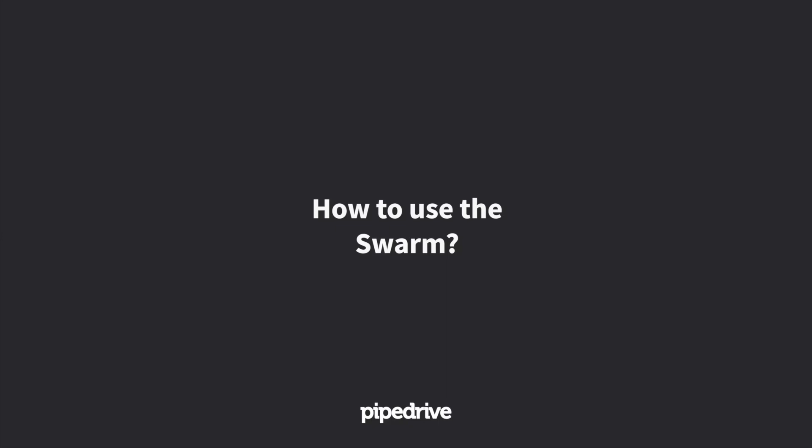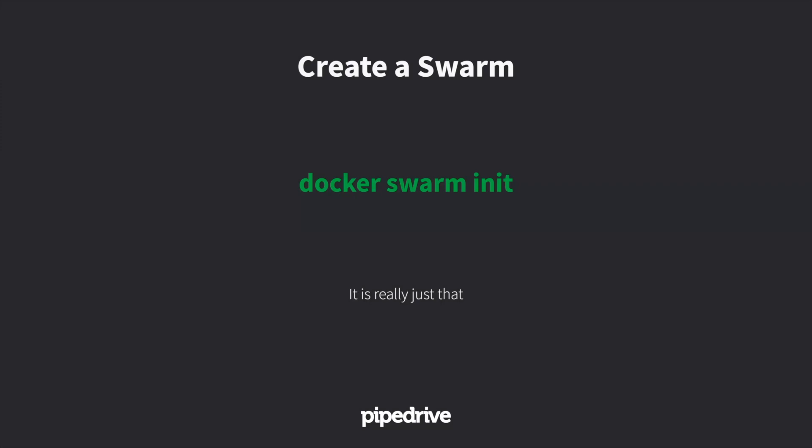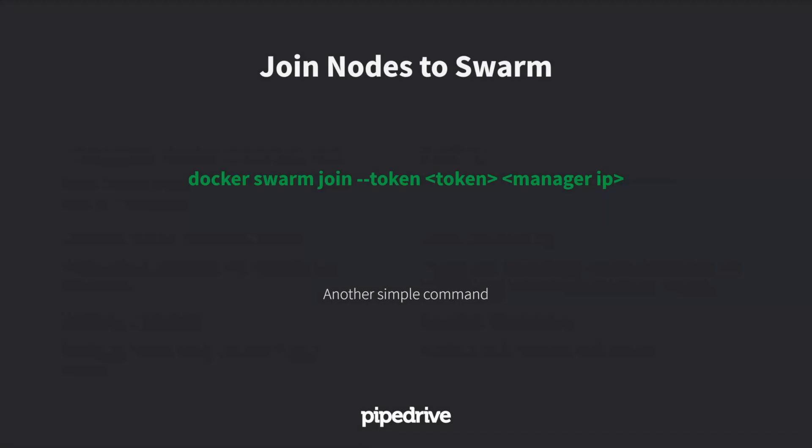How to use Swarm? The first step is simple — just run `docker swarm init`. That's the only command needed to create a swarm. You can even test it on your laptop with Docker Desktop and have a single-node swarm. Then, to join workers, you run `docker swarm join`. Let's now do a demo.